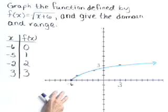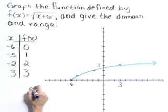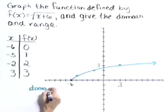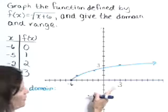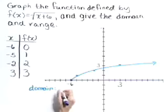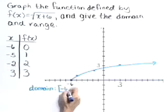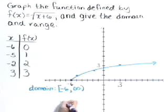Now let's write our domain and range. The domain is the listing of the x-values. We get to use x = -6 and every x-value larger than that. So our domain is [-6, ∞).